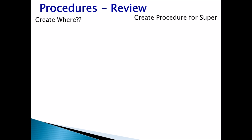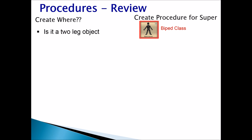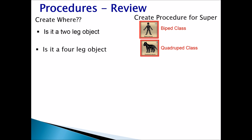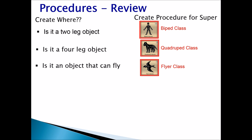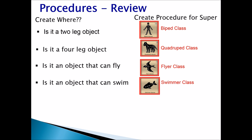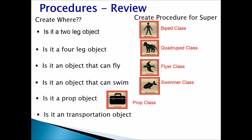When creating procedures, always create them for the appropriate superclass. Is it a two-legged object? Create the procedure for the biped class. Is it a four-legged object? Create it for the quadruped class. Does it fly? Create the procedure for the flyer class. Does it swim? Create it for the swimmer class. Is it a prop? Create it for the prop class. Is it a transportation object? Create it for the transport class.